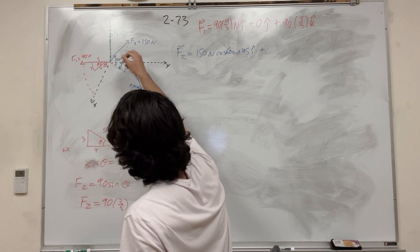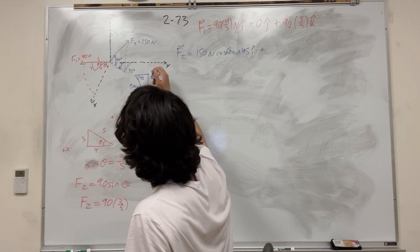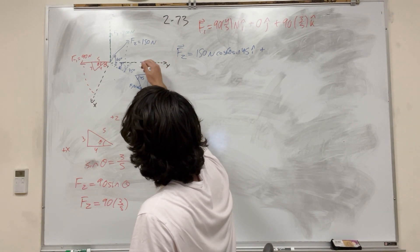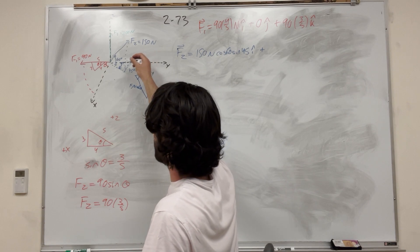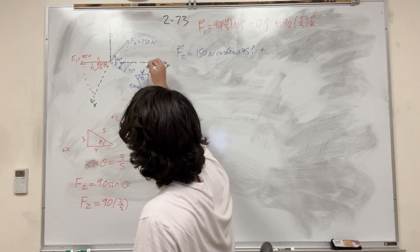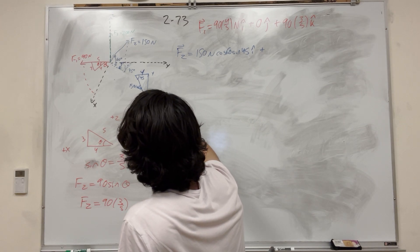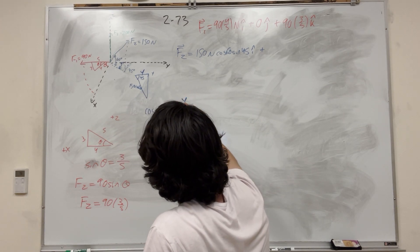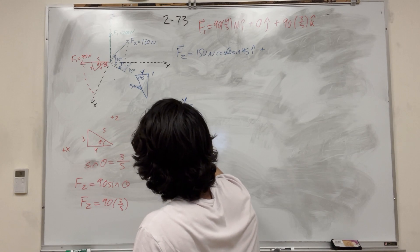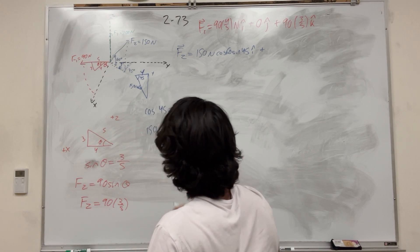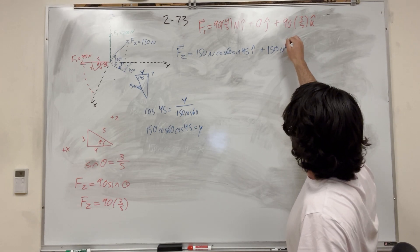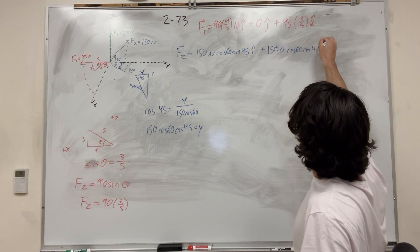Using the same triangle laying flat in the x-y plane — we found that the hypotenuse in that plane is 150 × cos(60°). Now we want what happens in the y-direction. Cosine of 45 degrees equals adjacent over hypotenuse, so y = 150 × cos(60°) × cos(45°). That's the j-component: 150 Newtons × cos(60°) × cos(45°) j-hat.